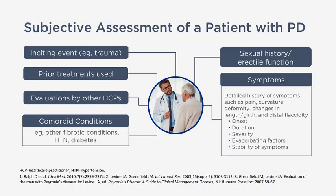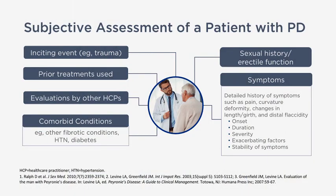It's very important to take a detailed history when a patient comes in with Peyronie's disease. Do they have any comorbid conditions such as diabetes, which has been associated with Peyronie's disease? Have they been treated by any other provider? Have they used any medications or injections for this condition? Are they able to get an erection? There's no point in making the penis straight if a patient cannot get an erection. I also ask about when it started, how long they've had Peyronie's disease, how severe the curvature is, and how long they've had these symptoms.